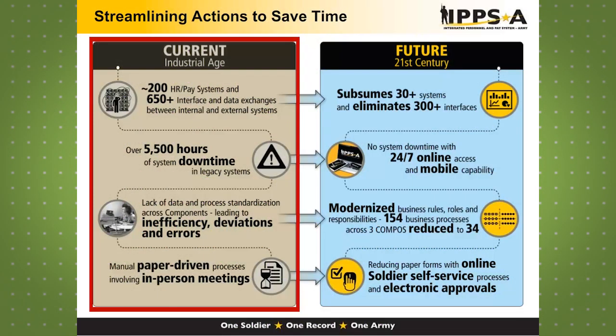Today the Army uses a hard copy of the DA Form 4187 to request a lateral appointment. It is then manually routed to an approver and entered in eMILPO, SIDPERS, or RLAS. This could take a week to get the request into place.